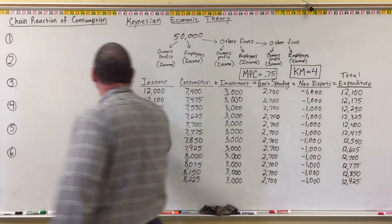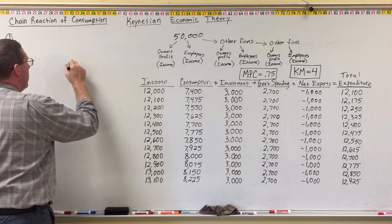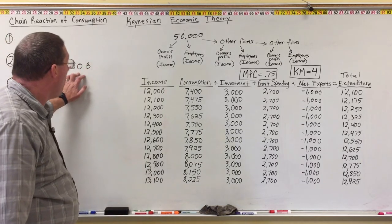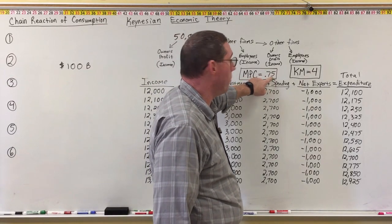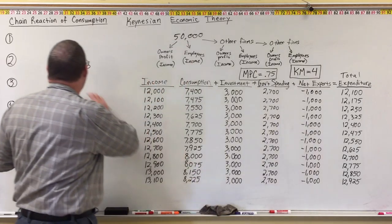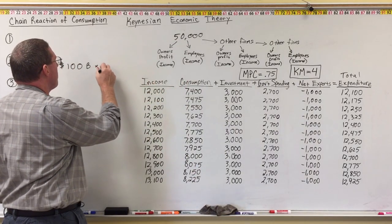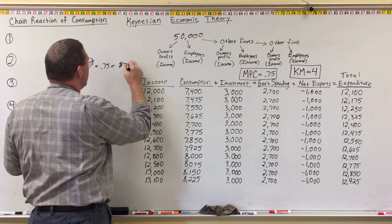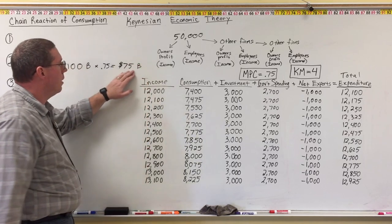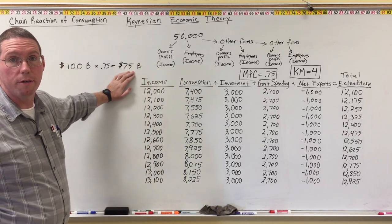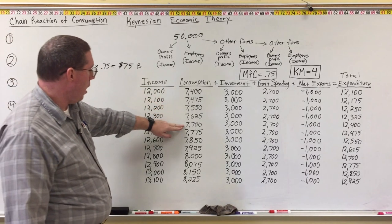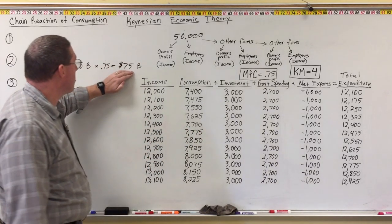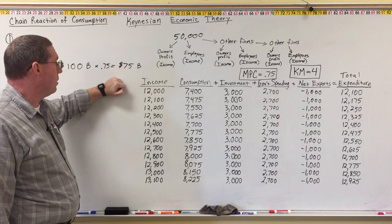So now we have an increase in income of $100 billion. According to the marginal propensity to consume, which is 0.75, an increase in income of $100 billion times 0.75 will result in a $75 billion increase in consumption. So consumption will go up from $7,700 up to $7,775 — an increase in consumption of $75 billion.